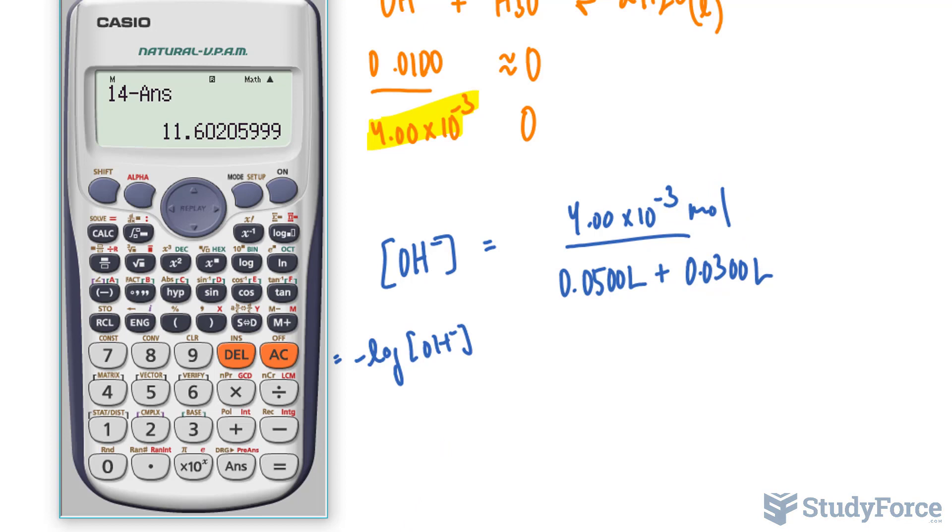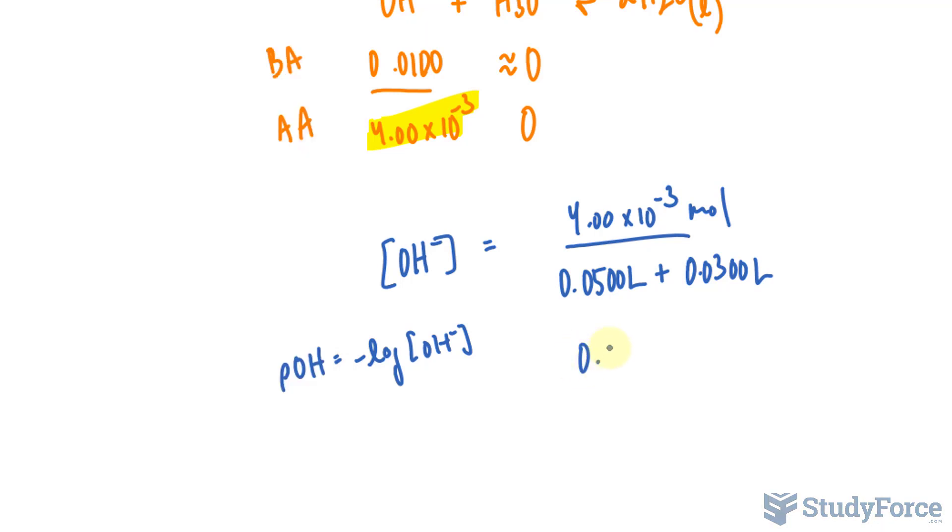So we end up with 4.00 times 10 raised to the power of negative 3, divided by the volume, and we end up with a concentration of 0.0500 molar of OH minus.